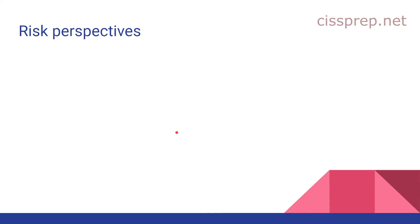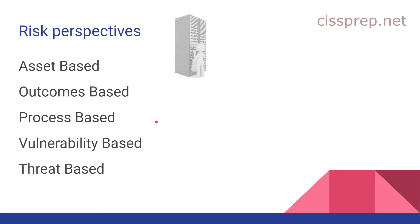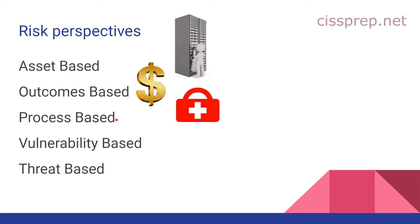Now let's look at risk perspectives, which is a new subtopic that appeared in domain one. We have asset-based, outcomes-based, process-based, vulnerability-based, and threat-based. Asset-based is identifying risks based on what can happen to your assets, like your data center or your data. Outcomes-based is identifying what can happen to your desired outcomes such as profits, income, or sales. Process-based deals with safety outcomes — there's literally less than one sentence on this, so from what I can tell it's alluding to safety-related outcomes with differences or changes to processes. I think outcomes and process-based are intertwined or conflated in some way.